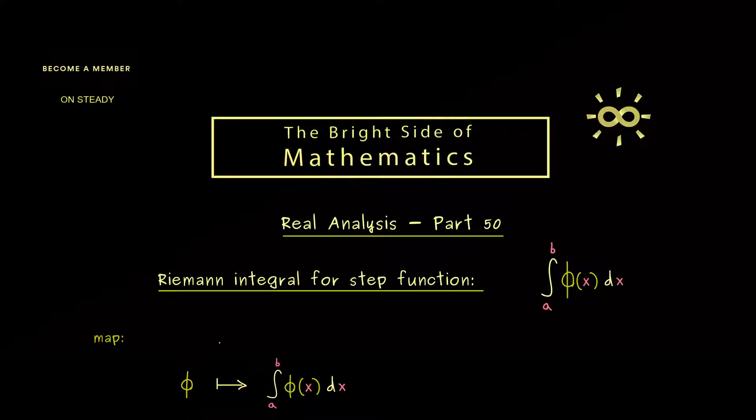Now on the set level this means on the left hand side we have the set of all step functions, and on the right hand side we just have the real number line. And for the set of all step functions defined on the interval ab let's use a capital S, and then let's put the interval in parentheses. Now this map has some nice properties we can immediately prove by using the definition of the integral.